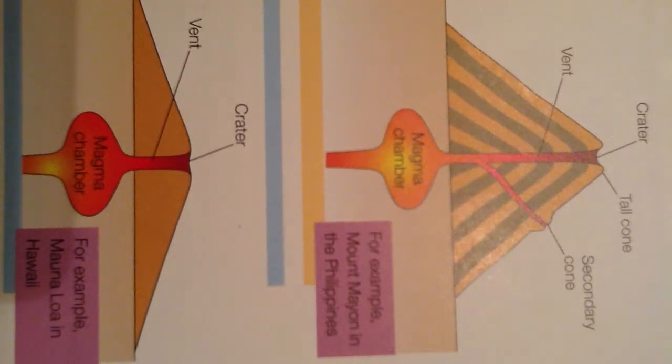Shield volcanoes have a wide base with gently sloping sides. The lava is runny so it can flow a long way. It is also basic or basaltic. Finally the eruptions can be frequent but they are not that violent.